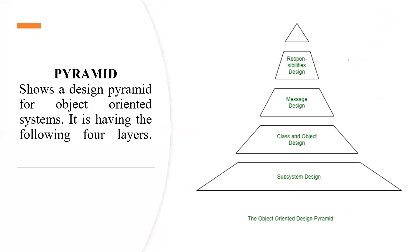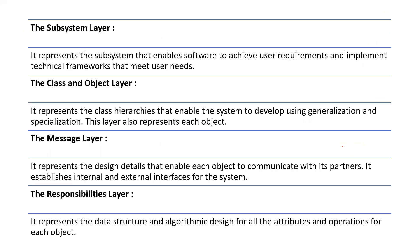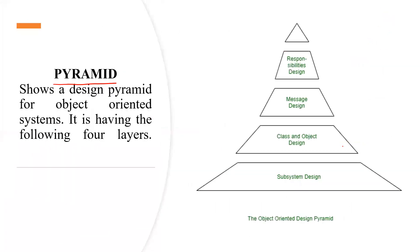Now, let's go here. You see a pyramid here. First of all, here I have the sub-system design layer. Then there is the class and object design layer. Then there is the message design layer, then there is the responsibilities design layer.